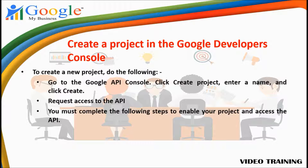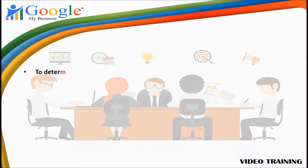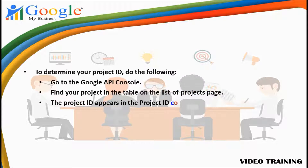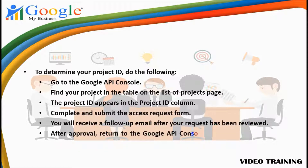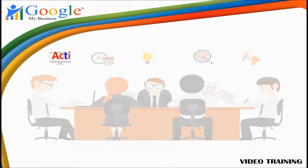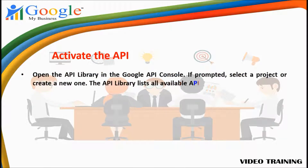You must complete the following steps to enable your project and access the API. Go to the Google API Console and select the project you created for use with Google My Business. To find the project ID, go to the console, find your project, and then complete and submit the access request form. You'll receive a follow-up email after your request has been reviewed. After approval, return to the Google API Console and enable the Google My Business API for your project.